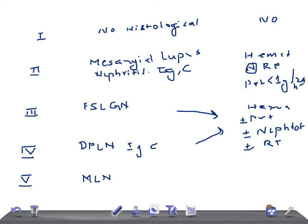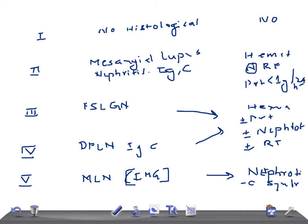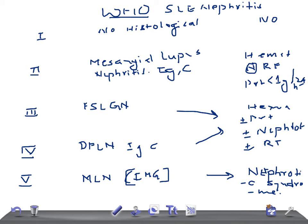In class five, the patient will have nephrotic syndrome. So this is our WHO classification of SLE nephritis. Thank you so much.